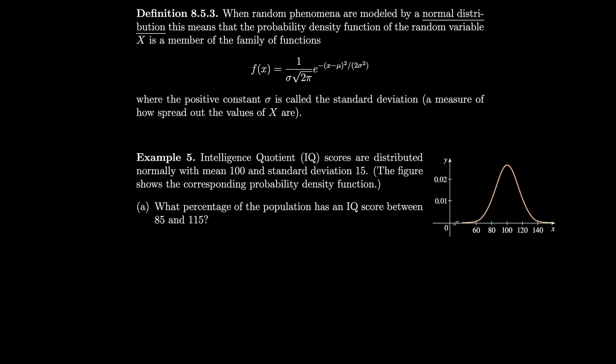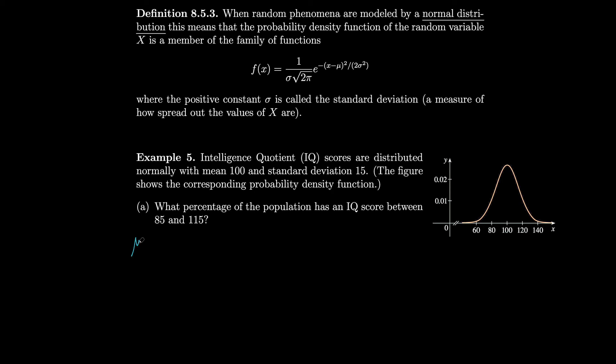Let's do an example. IQ scores are distributed normally with mean 100 and standard deviation 15. This figure shows the corresponding probability density function — whenever you see this bell curve shape, that's typical of a normal distribution. We want to find what percentage of the population has an IQ score between 85 and 115. Our mean mu is 100 and standard deviation sigma is 15.